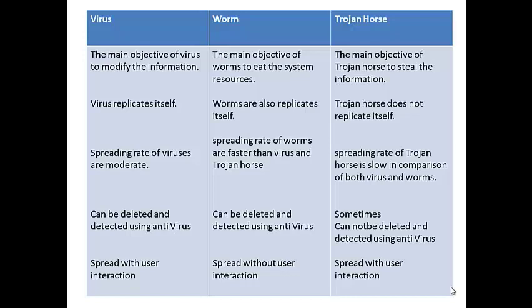Virus can replicate itself — from 2 it becomes 4. Worms can also replicate, but a Trojan horse does not replicate itself. The spreading rate of viruses is moderate. Worms spread faster than both virus and Trojan horse. The spreading rate of Trojan horse is low in comparison to both virus and worm.